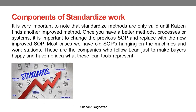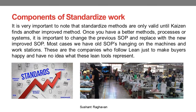It is very important to note that standardized methods are only valid until Kaizen finds another improved method. Once you have a better method, process, or system, it is important to change the previous SOP and replace it with the new improved SOP. In most cases, we see old SOPs hanging on machines and workstations — these are companies that follow lean just to make buyers happy and have no idea what these lean tools represent.